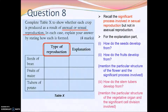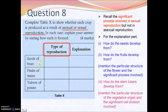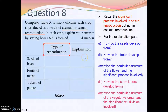For the first question, we need to complete a table by distinguishing whether these plants undergo sexual or asexual reproduction. Remember that the significant process involved in sexual reproduction but not in asexual reproduction is fertilization. So whether the seed, fruit, or stem tuber reproduces sexually or asexually depends on whether fertilization occurs.